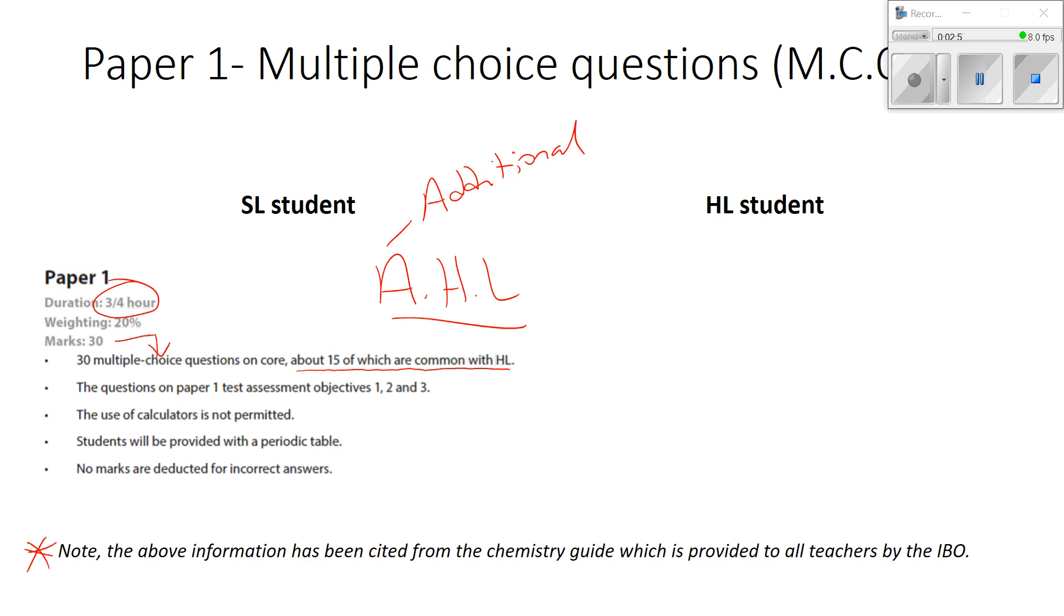And so when you pick up a standard level paper and a higher level paper for paper one or for paper two, and I recommend you do this, you will see a lot of questions in common. And that's deliberately in the structure of the IB exams. The second bullet point here is that the questions on paper one test assessment objectives one, two, and three. So I thought I better just quickly show you what they mean by objectives one, two, and three. So if we come out of this presentation for a second, we have another document here where we talk about these assessment objectives.